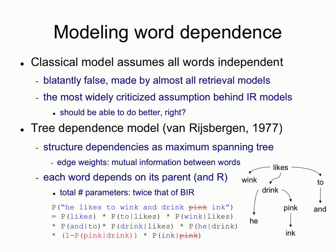If your document was 'he likes to wink and drink ink' — so all those words occurred, but 'pink' did not — you would compute the probability under the dependence model by conditioning each word on its parent. 'Likes' has no parent, so you take the probability that 'likes' occurs. 'To' is conditioned on 'likes,' so you take the conditional probability that 'to' occurs given that 'likes' occurs — because 'likes' did occur in the document. Otherwise, you would condition on 'not likes.'